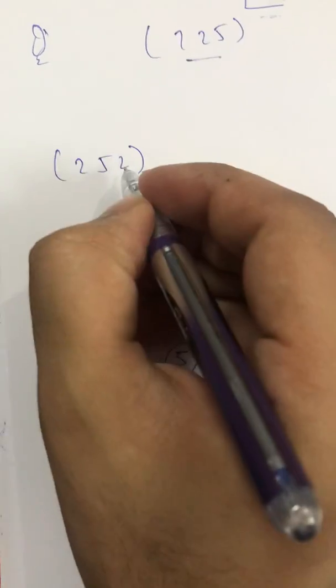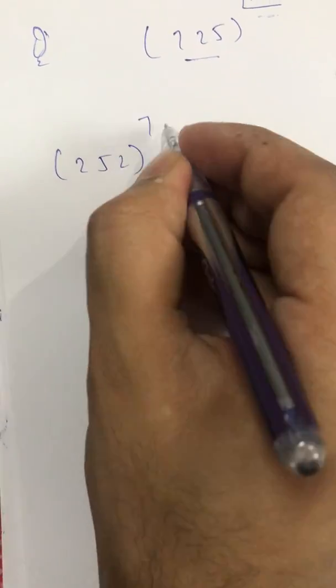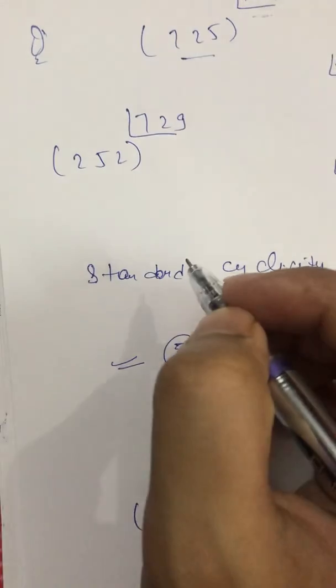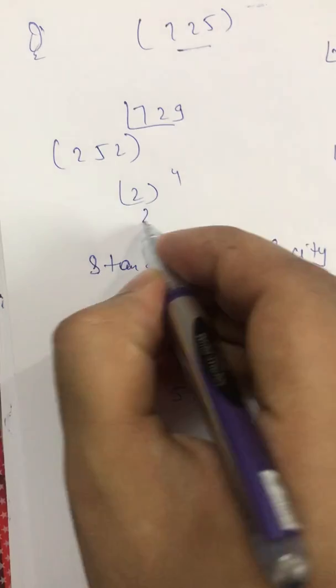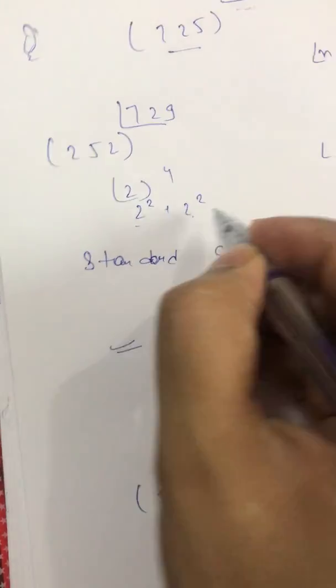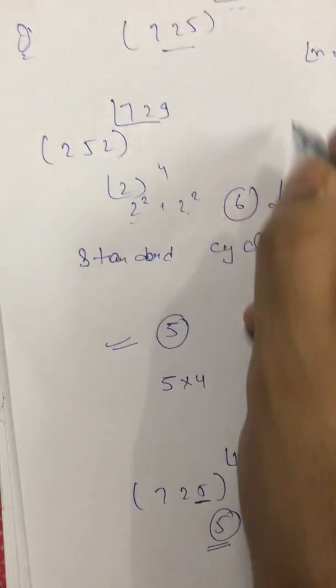Getting my point clear or not? Suppose they are asking me 252 raised to the power 729 factorial. I will directly write 2 raised to the power 4 it means 2 square into 2 square it means 4 into 4 that is 16 answer will be 6 that leads to my answer.